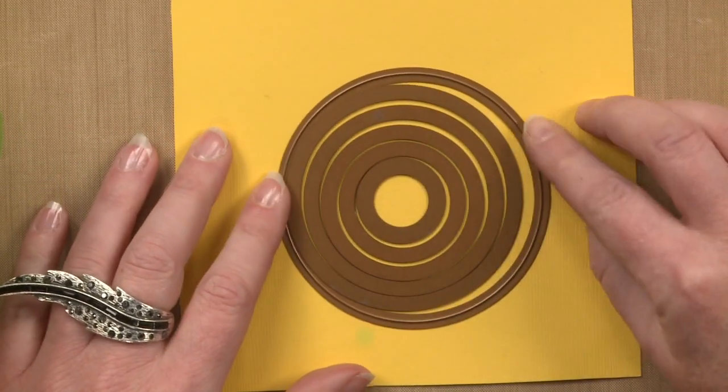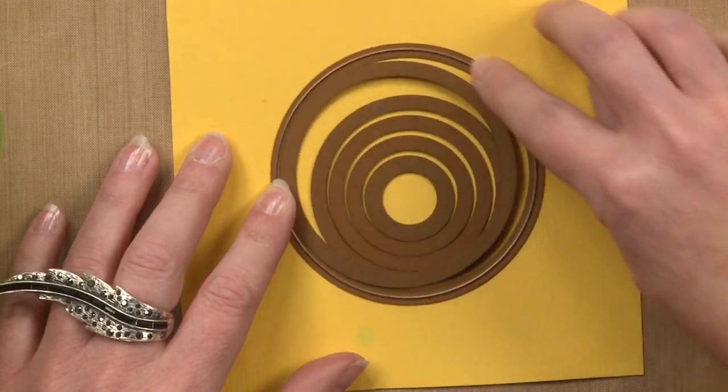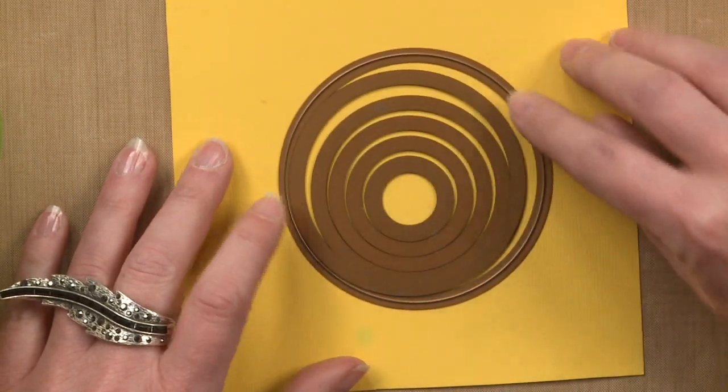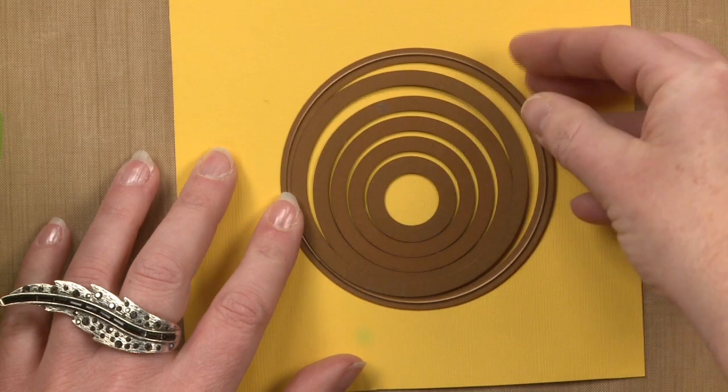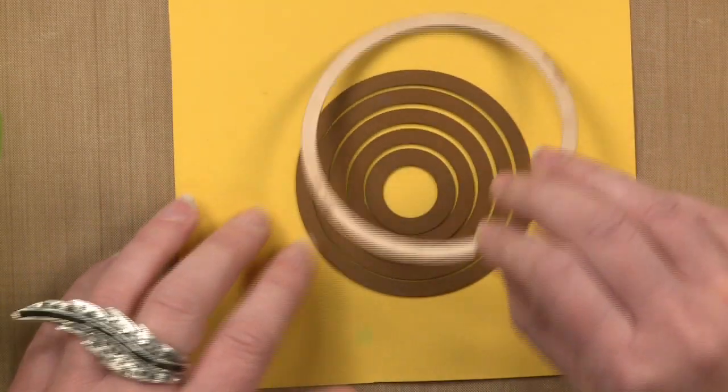Now you'll notice here that these steel rule dies have the cutting edge right here so it's very thin and it cuts very nicely through paper.